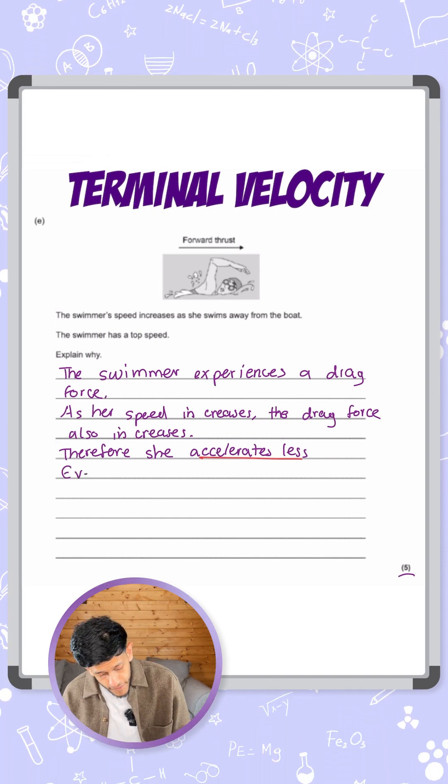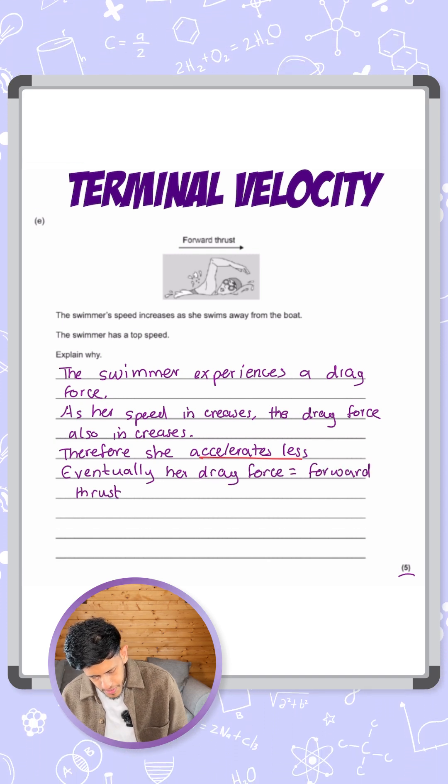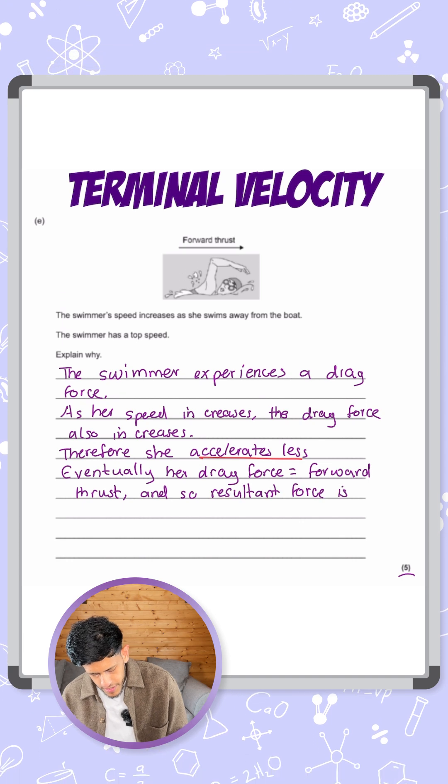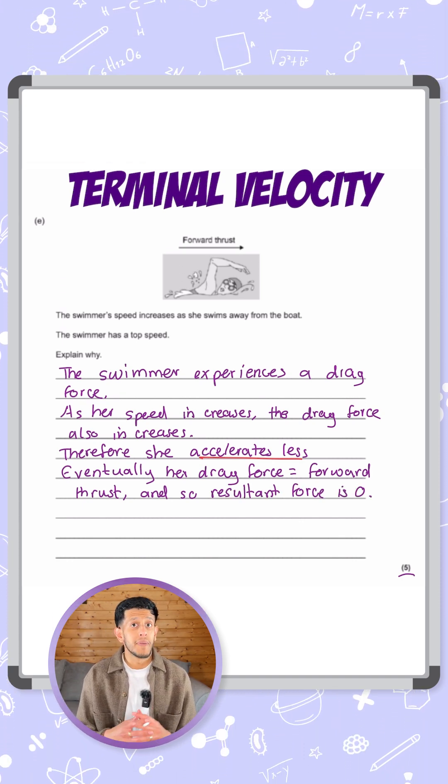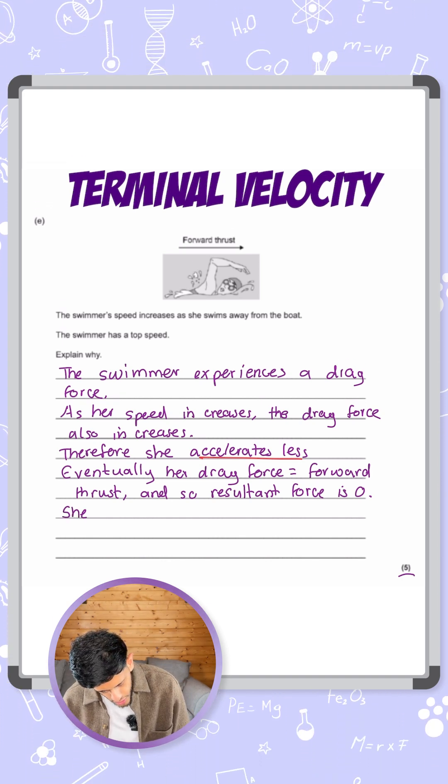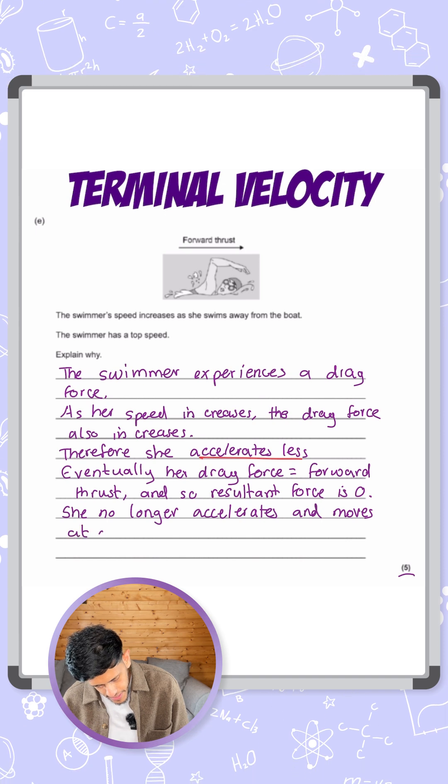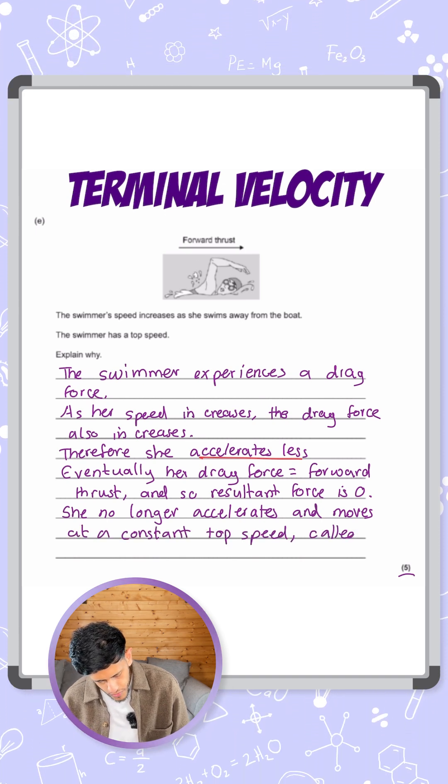And then we're going to say eventually her drag force equals the forward thrust that she is applying, and so the resultant force is zero. And as a result of that, the resultant force is zero, the forces are balanced, there is no acceleration. So we say she no longer accelerates and moves at a constant top speed called terminal velocity.